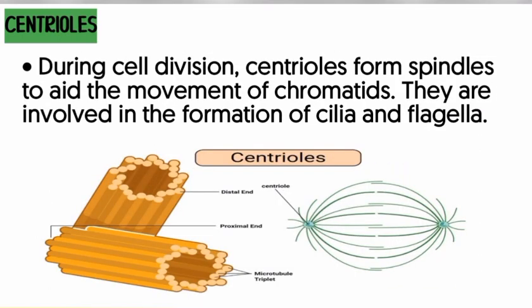The centriole is also an important structure, but it is only found in animal cells, not in plant cells. Centrioles function during cell division — that is when they work. Their function is to help form spindles. Spindles are structures that look like lines running from one end to the other. Centrioles help in forming spindles, and these spindles allow the movement of chromatids during cell division. Apart from this, they also help to produce cilia and flagella, which are used for movement.